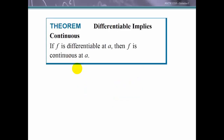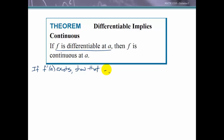Now let's look at a theorem: if f is differentiable at a, then f is continuous at a. We're going to prove that differentiability implies continuity. If we know that f prime of a exists — so the function is differentiable at a — then we want to show it is continuous at a. By the definition of continuity, we need to show that the limit as x approaches a of f of x equals the function value f of a.